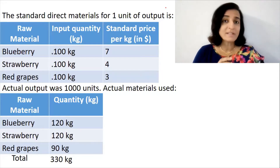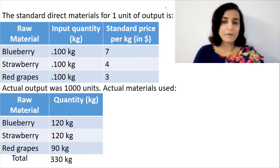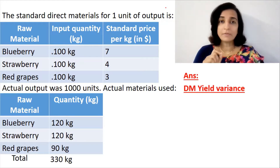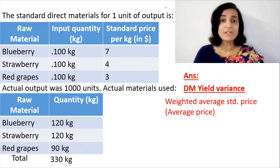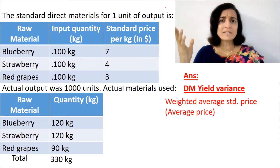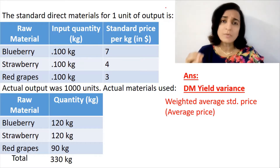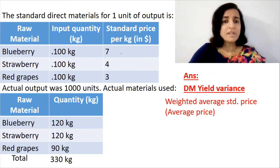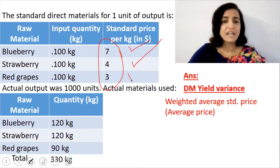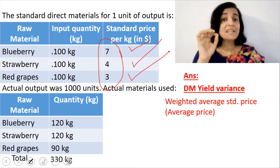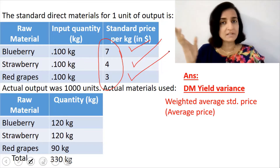This is the very same question that we did for calculating the direct material mixed variance. Now for calculating the direct material yield variance, the first thing that we have to find out is the weighted average standard price. We have got three raw materials priced at $1.7 per kg, $1.4 per kg, and $1.3 per kg. We want to find out the average price of these raw materials — that is the meaning of weighted average standard price.